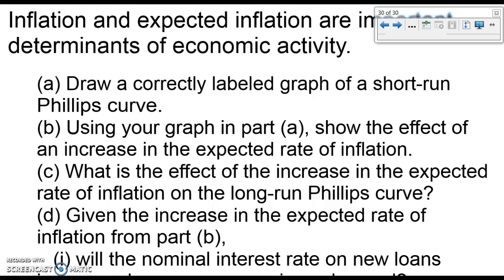Part A is draw a correctly labeled graph of a short-run Phillips curve. So that was what you did in the first video. You learned about, you should know what the x-axis is. Remember, it should be unemployment, because the long-run Phillips curve needs to be at the natural rate of unemployment. So x-axis is unemployment, y-axis is inflation. And then you just draw that downward sloping curve and call it the SRPC or the short-run Phillips curve.